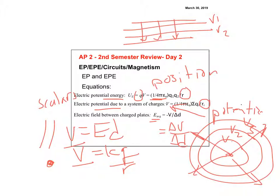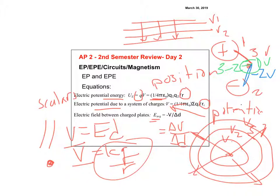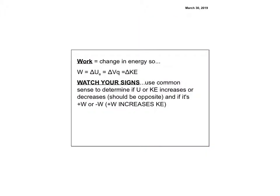For example, if you have a positive and a negative charge and want the potential at a point between them: use KQ/R for each. Say the positive gives +3 volts and the negative gives -2 volts — the total potential is 3 minus 2 = 1 volt. It's a scalar, so no direction needed.